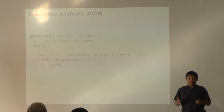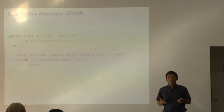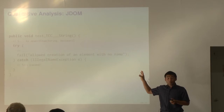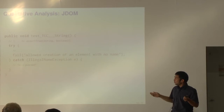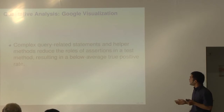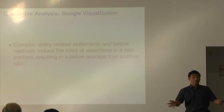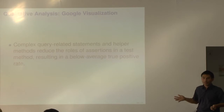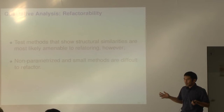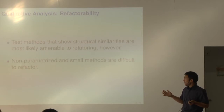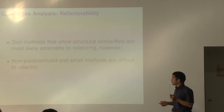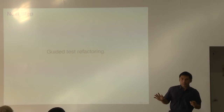Tests also show you exceptions — something we often elide when reporting analysis results. Good tests will actually show you exceptions and what the program is supposed to do in those cases, so you can use that to better understand program behavior. Sometimes the technique doesn't work well — for instance tests for Google Visualization are just query strings you run and check the result, so similar test detection doesn't work well there. Overall we found test methods with structural similarities likely amenable to refactoring, plus some non-parametrized small methods that were difficult to refactor.